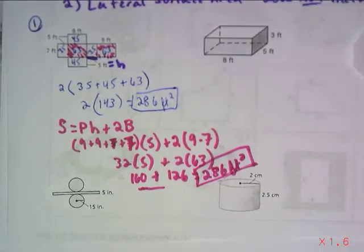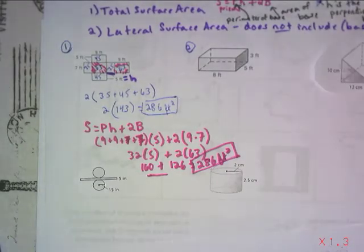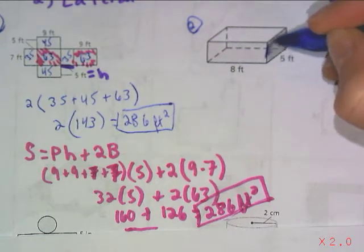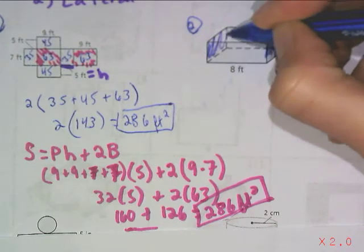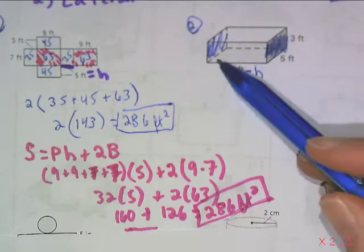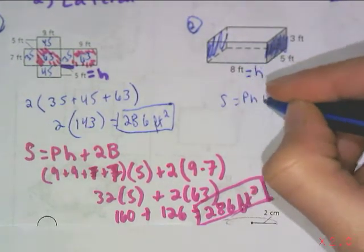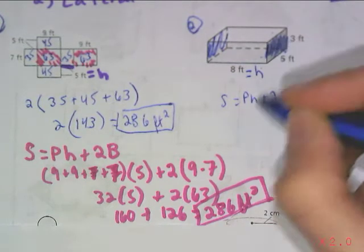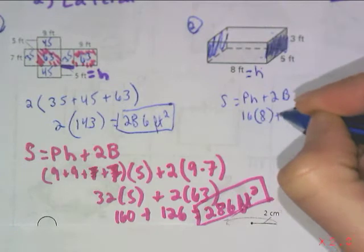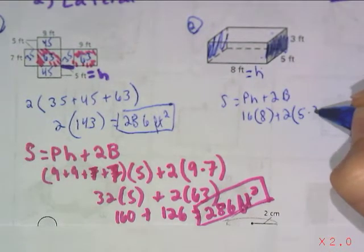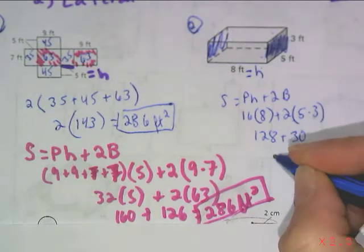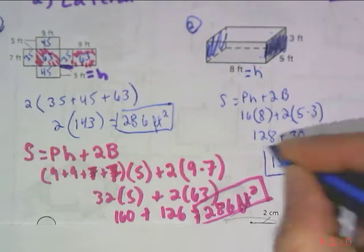If you have something like number 2 and it's not deconstructed into a flat net, go ahead and apply the formula. Any of these could be your base, so whichever one you choose, make sure you highlight it. They're showing that the 5 by 3 is the base, so the height to use is the 8 feet — the distance between the two bases. The perimeter is 5, 5, 3, and 3, that's 16 times 8, plus twice the base area of 5 by 3. That gives 128 plus 30, for a total of 158 square feet.